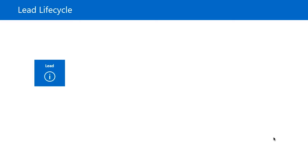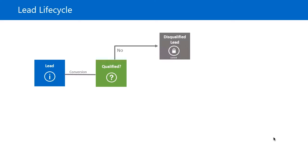So here we have a lead. Its full purpose is to be either qualified or disqualified — this is considered the conversion process. If we decide not to qualify the lead, maybe because we determine that what the prospect wants we can't deliver, we would disqualify the lead. When we disqualify the lead, it puts the record into an inactive status. The record becomes locked, meaning we can no longer modify it. However, it's possible to go back and reactivate the lead and put them through the qualification process again.